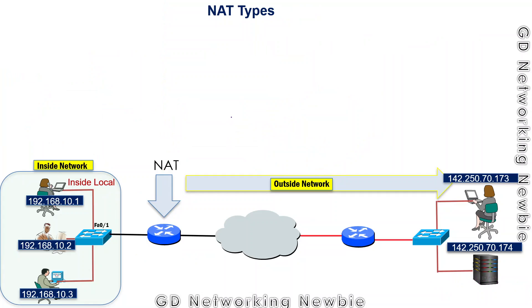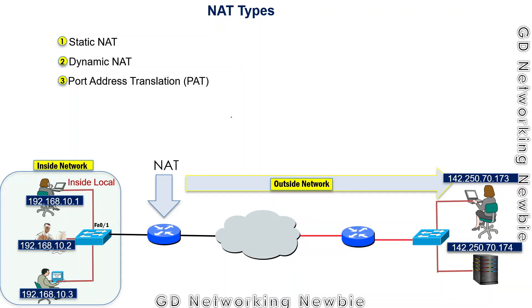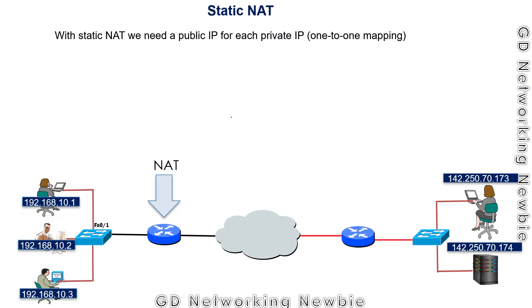There are three different types of network address translation: static NAT, dynamic NAT, and PAT — which stands for port address translation. Let's discuss them one by one.